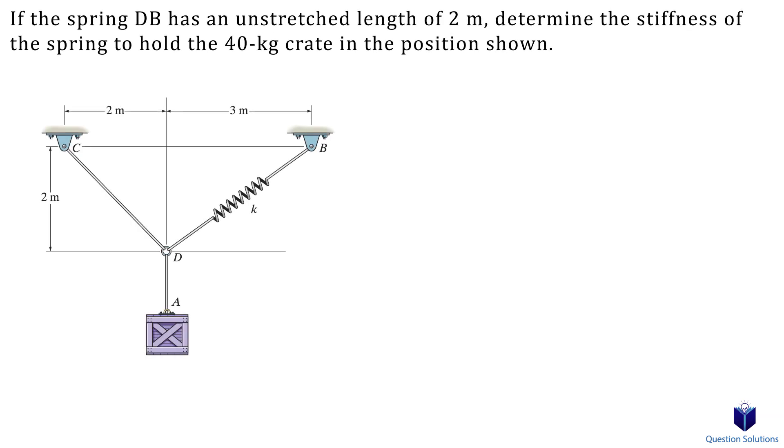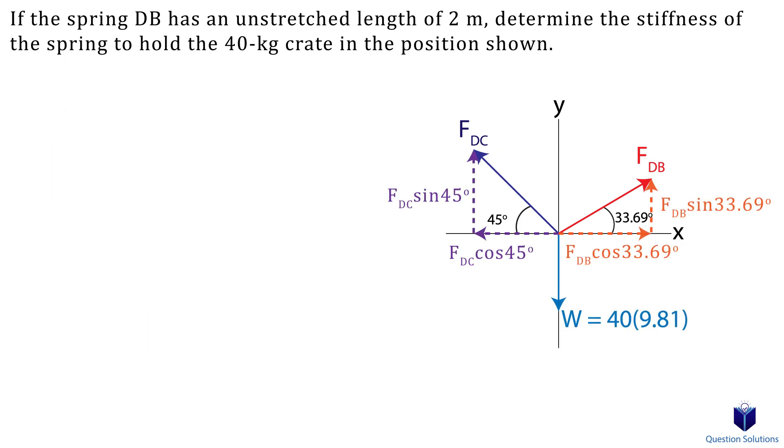Let's take a look at a question involving springs. Here we need to find the stiffness of the spring to hold the crate in the position shown. Before we draw a free body diagram, let's quickly calculate the angles. This angle can be found using tan inverse. Now for the other angle. Ok, now we will draw the free body diagram about point D. So we have the force in cable DC, the force in spring DB, and we have the weight of the crate. Now we can write our equations of equilibrium. Let's start with the x-axis forces. So we have the two x components of our cable and spring. Next, we can write an equation for the y-axis forces. We have the two y components plus the weight which is straight down. Now we have two equations with two unknowns. Let's solve them.